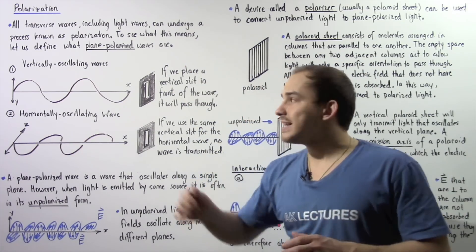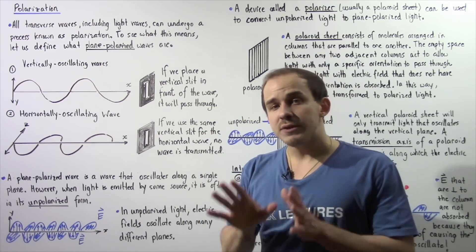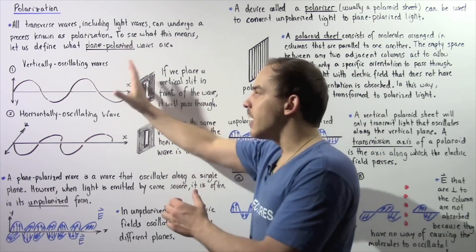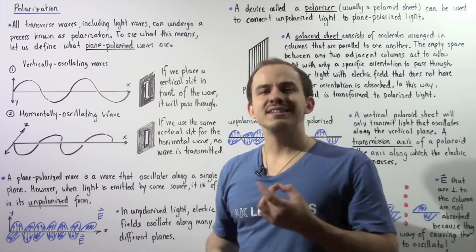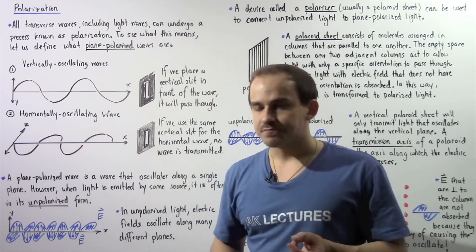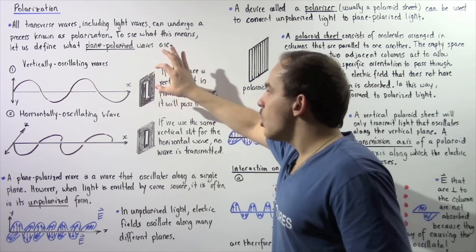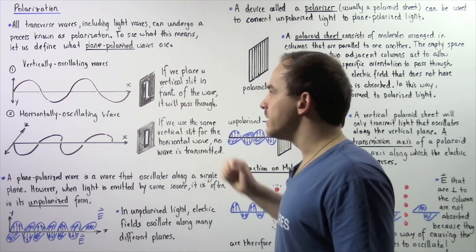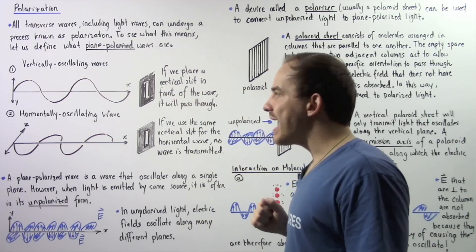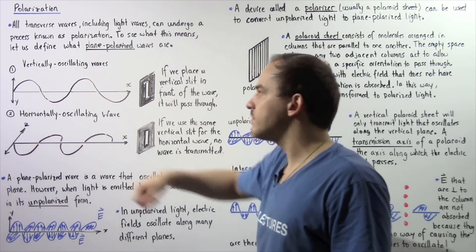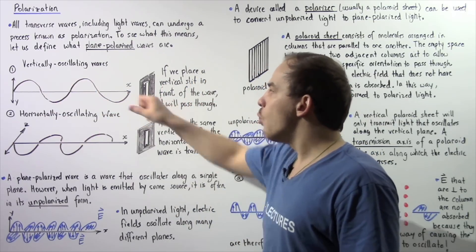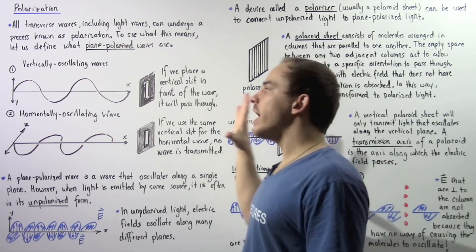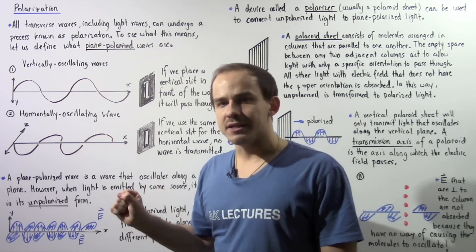Now, if we take a vertical slit and place it in front of our wave, what will take place? Because the orientation of the slit lies along the same axis as the oscillation of the wave, when the wave hits the opening, the entire wave will be transmitted.